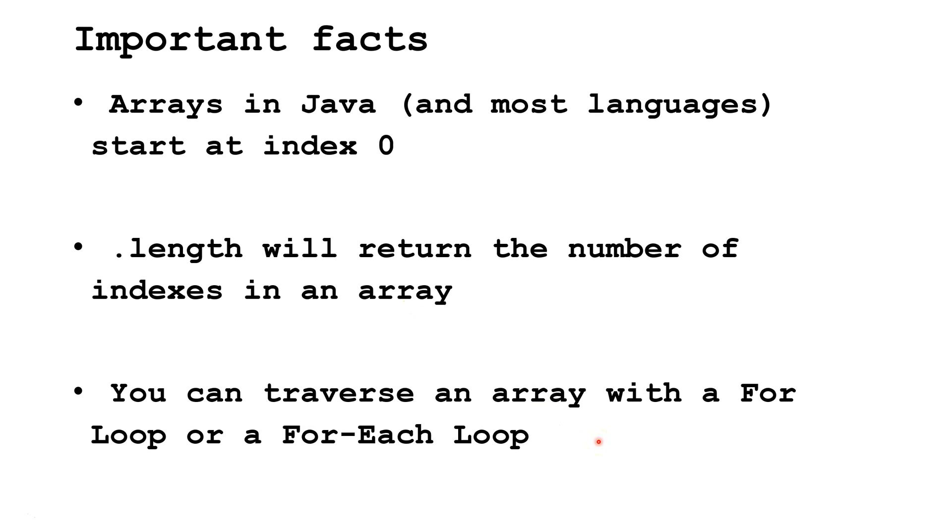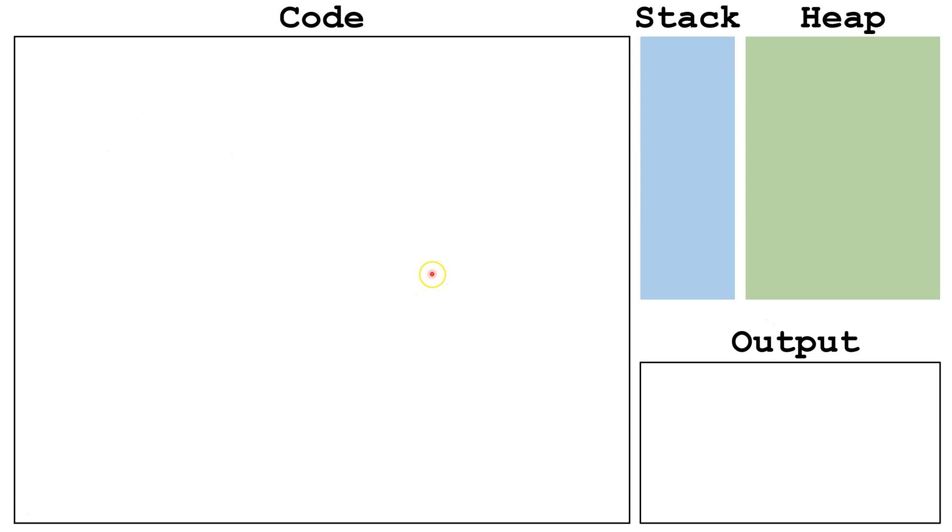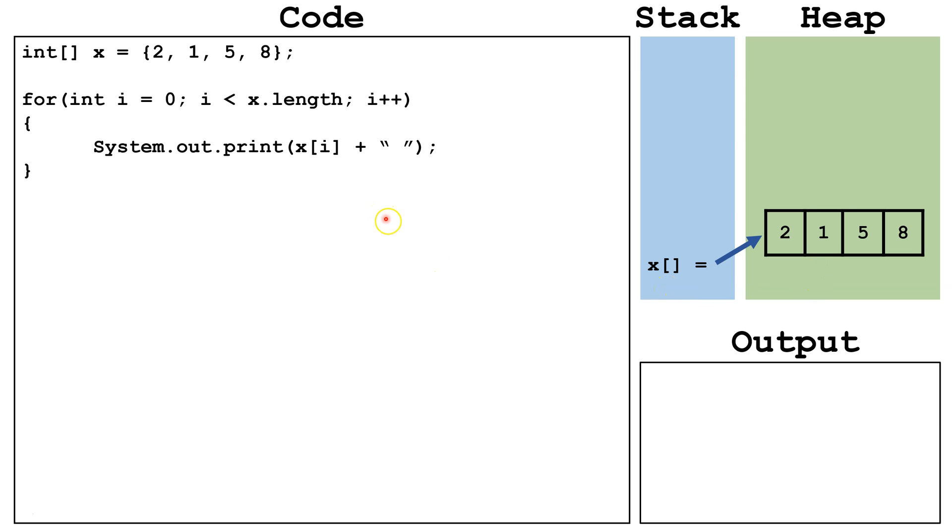You can traverse an array with a for loop or a for each loop. Let's start writing some code. Here we are declaring an array x and setting it equal to 2, 1, 5, 8. Here we can see the reference variable x on the stack and the array on the heap. Now let's write some code to traverse it with a for loop.